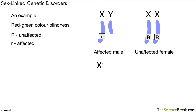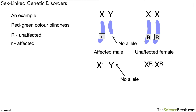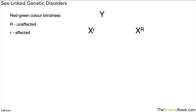We don't need to draw the chromosomes every time. For the affected male we write X with a small 'r' and Y, showing he is male with the recessive allele. For the female we write XX with capital 'R' next to each X. We don't write anything next to the Y because there's no allele there.